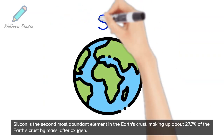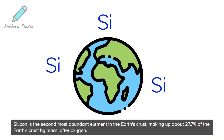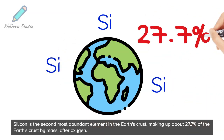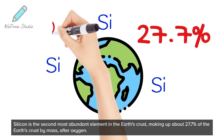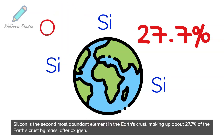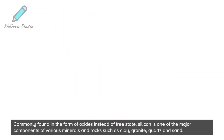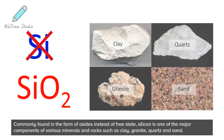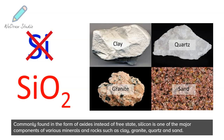Silicon is the second most abundant element in the Earth's crust, making up about 27.7% of the Earth's crust by mass, after oxygen. Commonly found in the form of oxides instead of free state, silicon is one of the major components of various minerals and rocks, such as clay, granite, quartz, and sand.